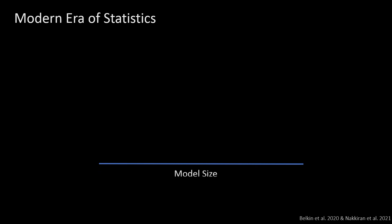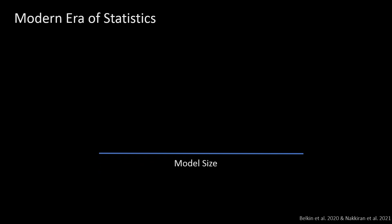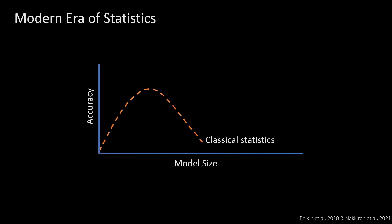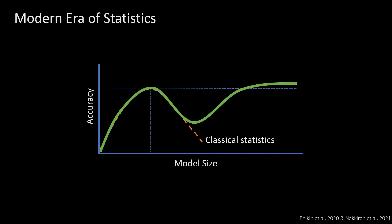I want to talk about how we got there. One of the things that we discovered is that we actually broke classical statistics. Classical statistics was telling us that as we increase the model size of these AI systems, the accuracy increases up to a certain point and then afterwards it fades away and leads to overfitting and those kinds of problems.